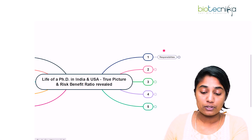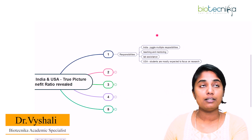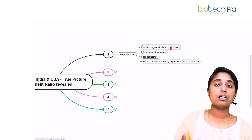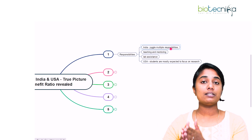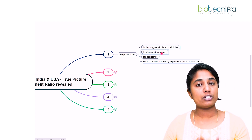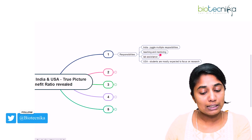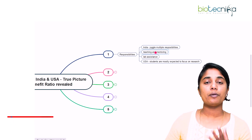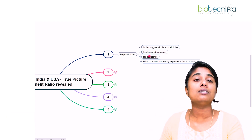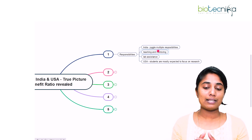The first point we're going to talk about is responsibilities. In India, PhD students juggle multiple responsibilities — they have to do teaching and mentoring for UG and PG students. You might have a class to take, or assist faculty who are taking a class, or mentor and guide UG and PG students in their project work. They could also be lab assistants, assisting students and professors in labs associated with the curriculum. So these are a few responsibilities apart from the research work itself.